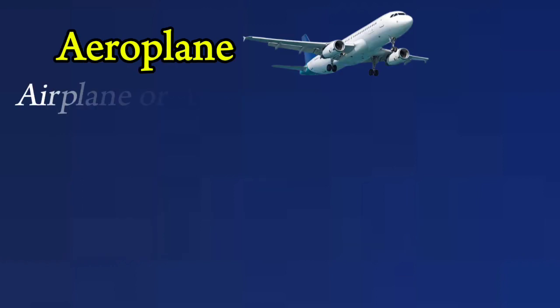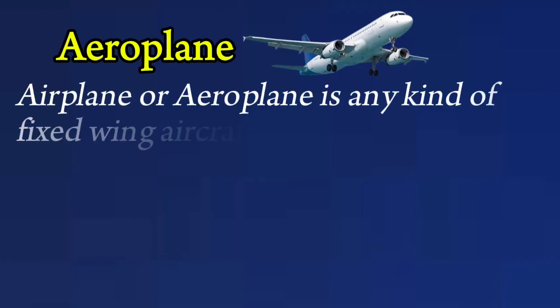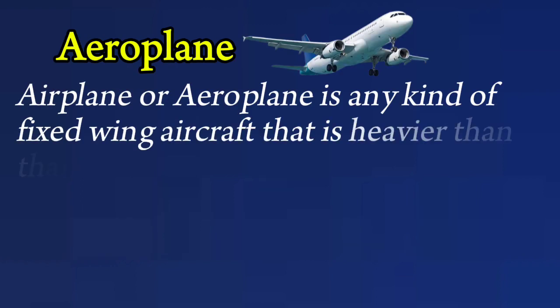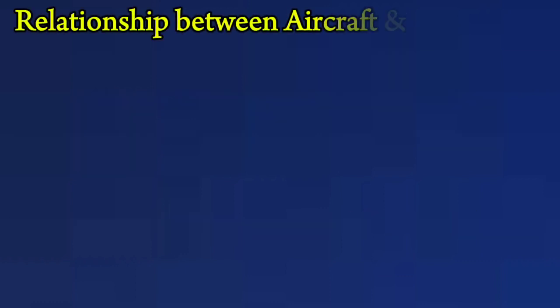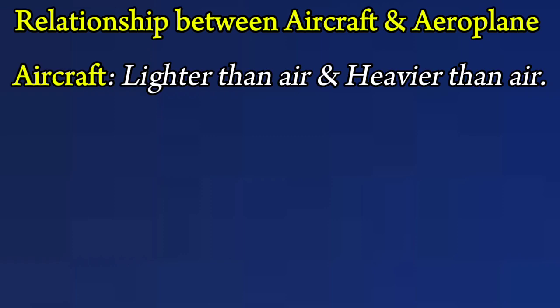An aeroplane, or airplane, is any kind of fixed-wing aircraft that is heavier than air, propelled forward by thrust from an engine. Regarding the relationship between aircraft and aeroplane: aircraft includes both lighter-than-air and heavier-than-air categories.